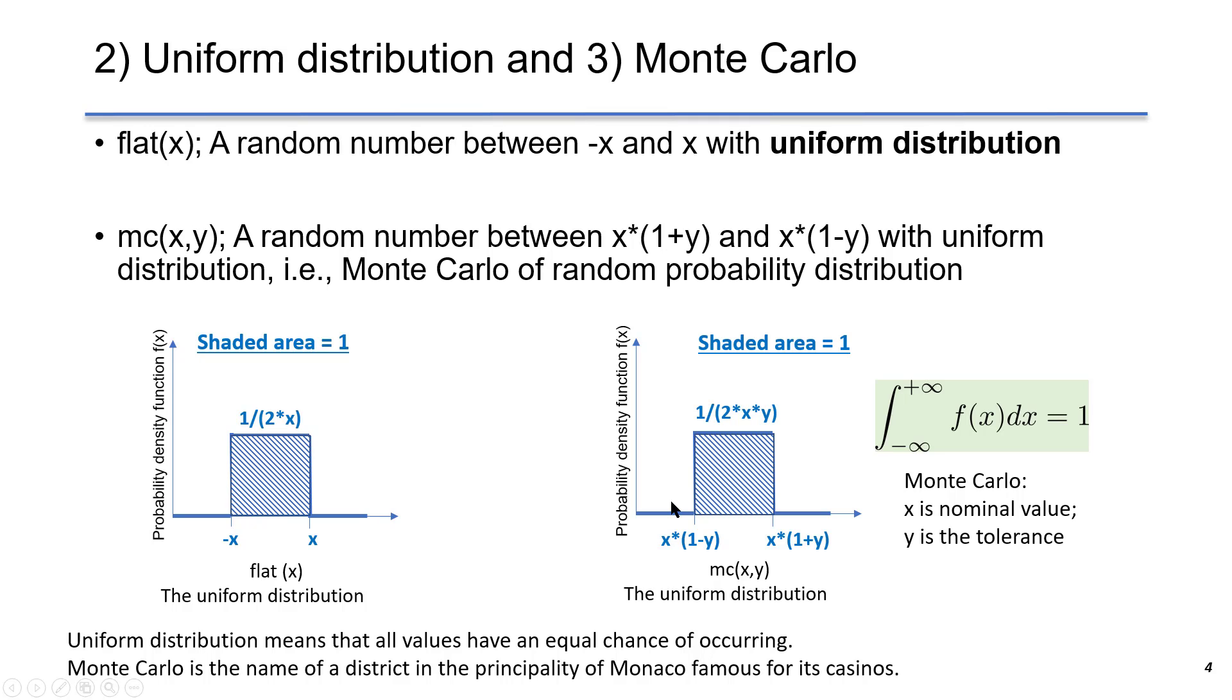The third probability distribution is Monte Carlo of random probability distribution. It is also a uniform distribution with a minimum number x times 1 minus y, and the maximum number is x times 1 plus y. In this case, x usually is the nominal value, and y is the tolerance.